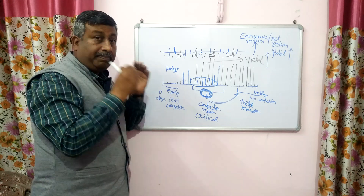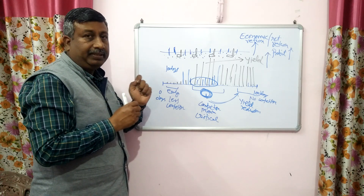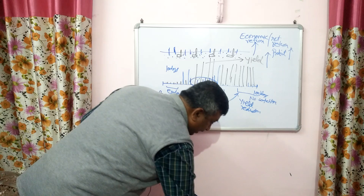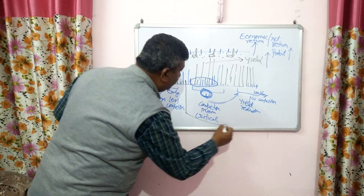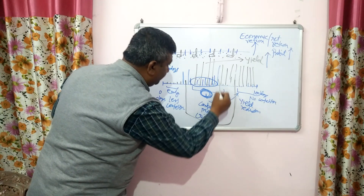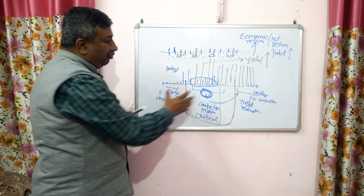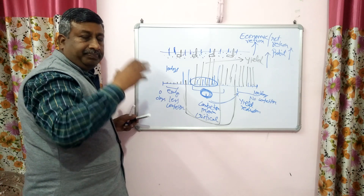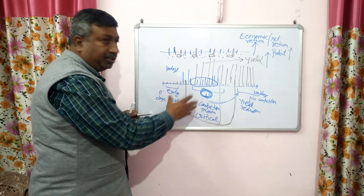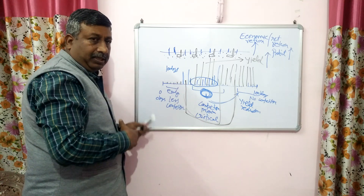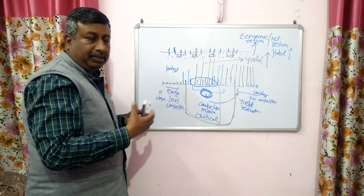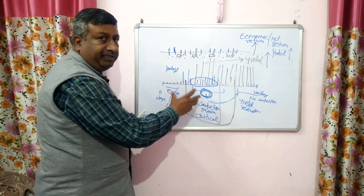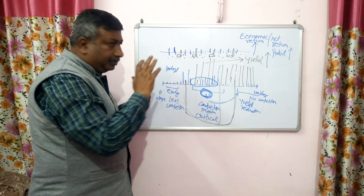Weeds should be removed when they cause the maximum yield reduction by competing. The critical period is the period between early growth competition and late crop-weed competition when weeds cause maximum yield reduction. It is the time span — part of the crop's life cycle — during which weeds cause maximum reduction in yield, and if weeding is done during this period, the crop will exert its full potential.